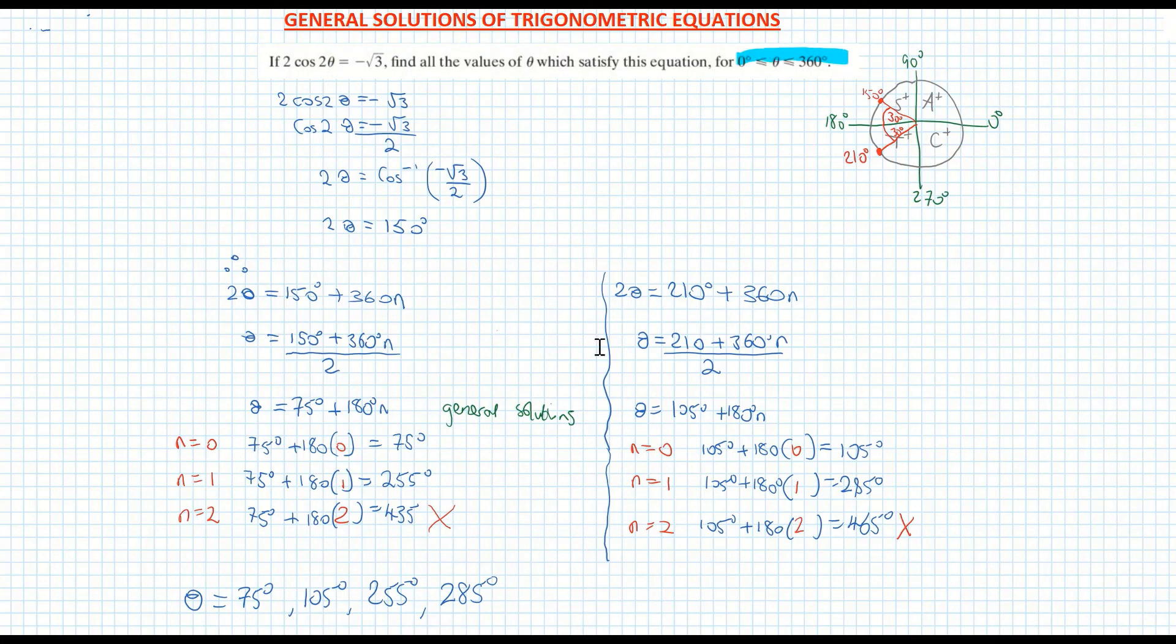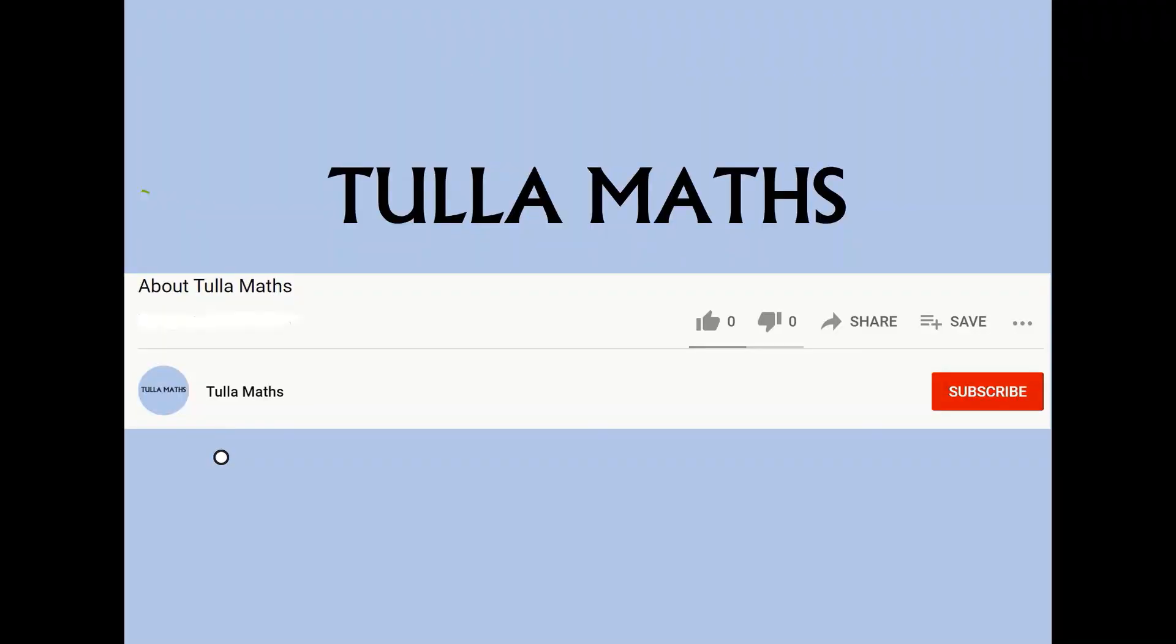If you're in doubt with any of these solutions, what I would advise you to do now is go to your calculator, sub these four values into your original equation here in yellow at the top, and you should get minus root three for each of your four answers. Thank you for watching another tutorial video from Tullamaths. Make sure and subscribe.